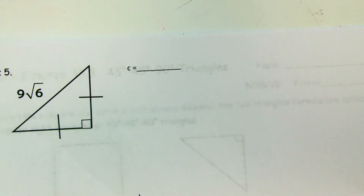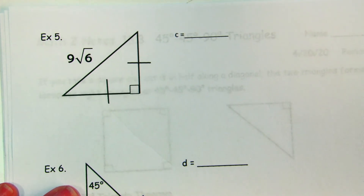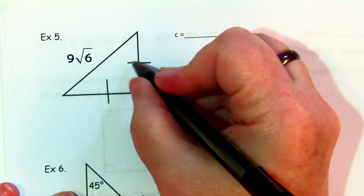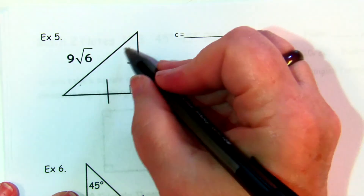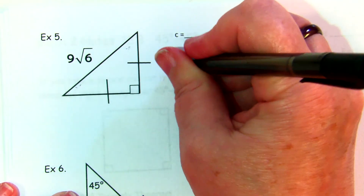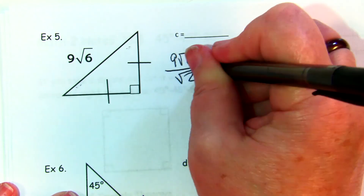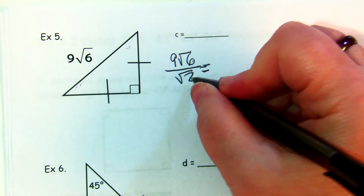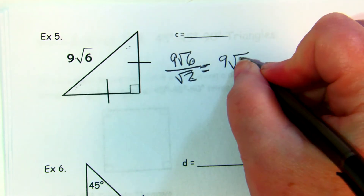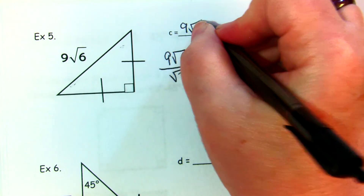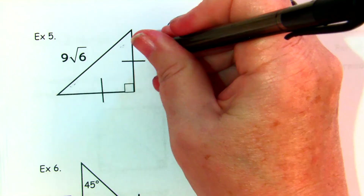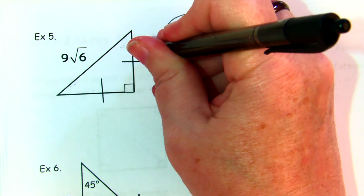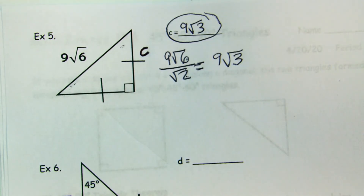Example five: the hypotenuse is 9√6, and it's an isosceles right triangle so it's a 45-45-90 triangle. You take 9√6 and divide by √2. √6 divided by √2 is √3, so the leg c = 9√3. Note: I didn't label c on the figure — c is one of the legs.